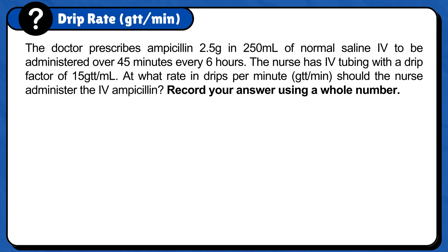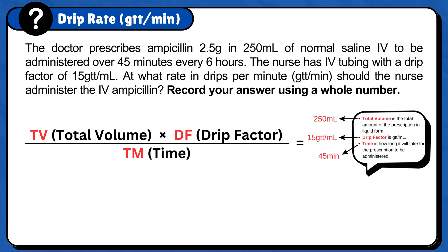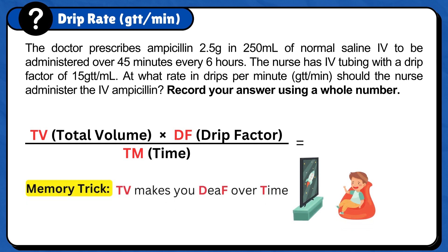First, set up the formula: total volume times drip factor over time. Total volume is the total amount of the prescription in liquid form. Drip factor is gtt per milliliter. And time is how long it will take for the prescription to be administered. Make sure you do not get confused with every 6 hours — this is how often you will administer the medication, not how long it will take. The memory trick to remember this formula is: TV makes you deaf over time.